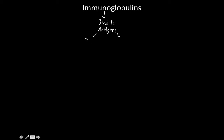Once it binds the antigen, it's going to do two things. It's going to act as an opsonin, or it's going to act as a neutralizing agent. If it's a virus, it's going to block that virus from getting into the cell. If it's a bacteria, it's going to block that bacteria's access to nutrients, or it's going to block that bacteria's ability to move around.